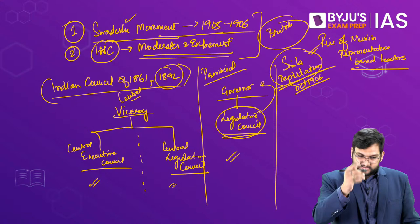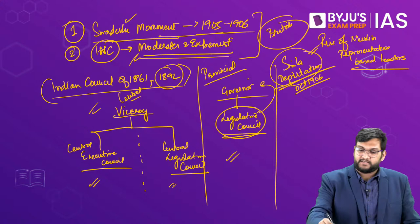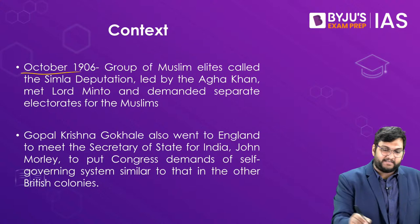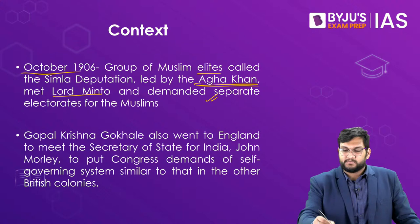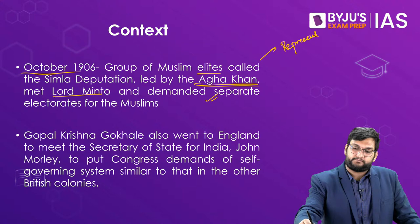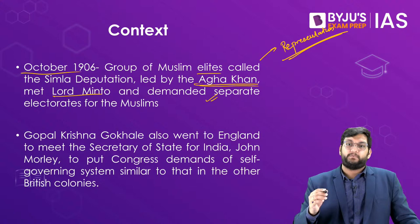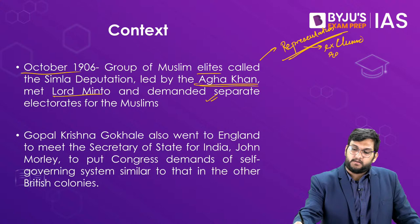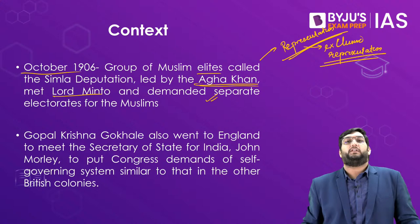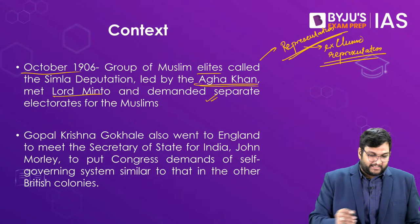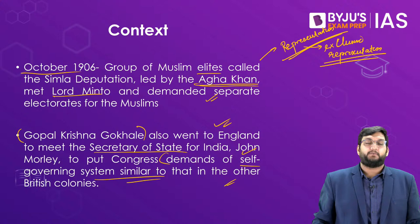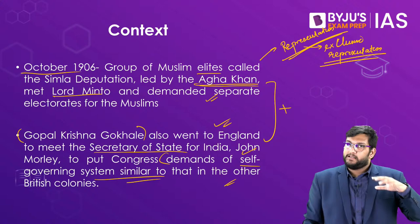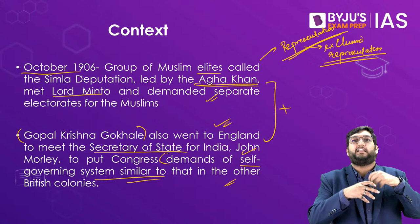The context is: Swadeshi movement first; second, the moderate and extremist tussle; and the basic administrative structure. In October 1906, a group of Muslim elites called the Shimla Deputation, led by Aga Khan himself, met Lord Minto and demanded separate electorates for Muslims, asking for exclusive representation. Meanwhile, Gopal Krishna Gokhale met Secretary of State John Morley to put the Congress demand of a self-governing system similar to other British colonies. These two pressures technically produced what we call the Morley-Minto reforms, or the Indian Council Act of 1909.